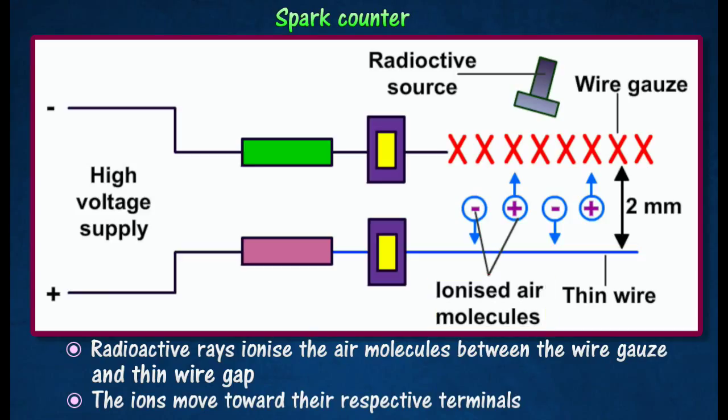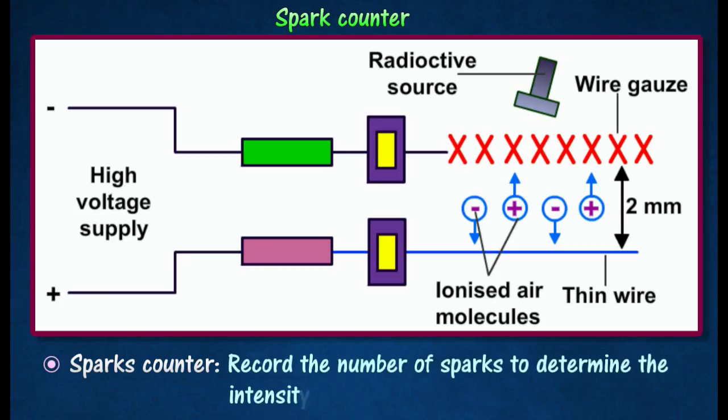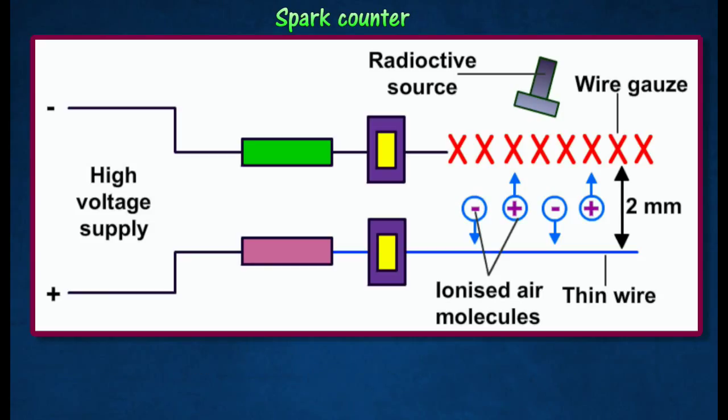The positive ions and negative ions produced are attracted to the wire gauze and thin wire respectively. The spark counter records the number of sparks to determine the intensity of the radioactive rays.